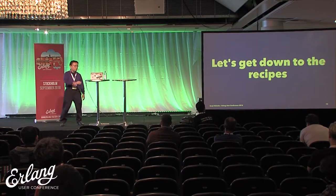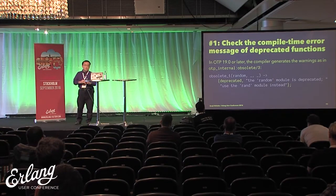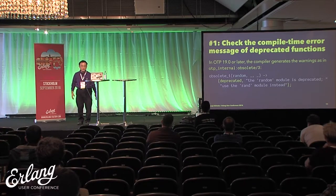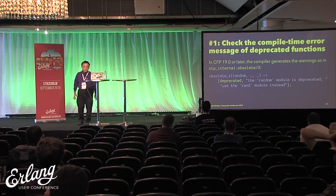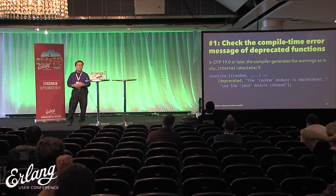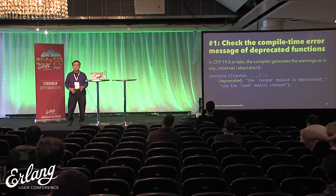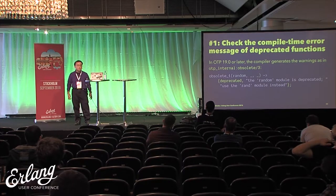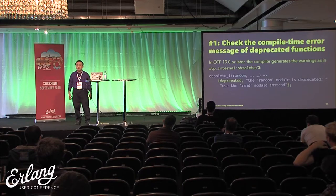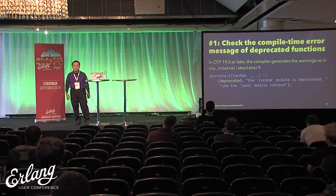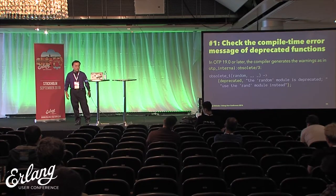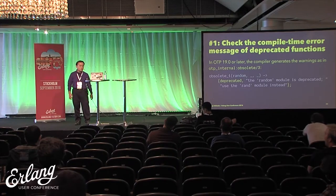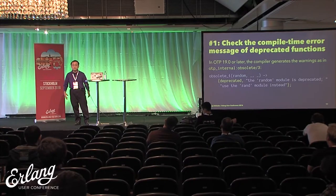Number one: check the compiler-time error messages of deprecated functions. First of all, you can find usage of now-deprecated functions — not only random but including the random module — by compiling the code. There's a module called OTP internal obsolete which lists all the obsoleted code — deprecated or removed. By this, the compiler will exactly show that if you're using the random module, it's deprecated; use the rand module instead. Listen to the compiler; listen to the advice first.